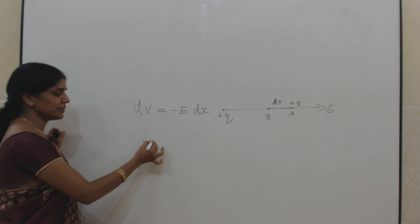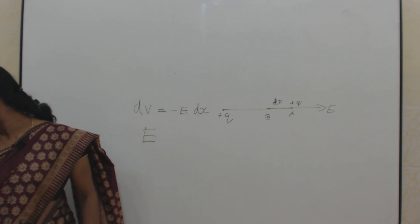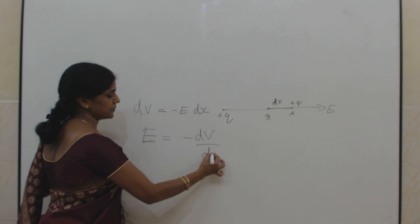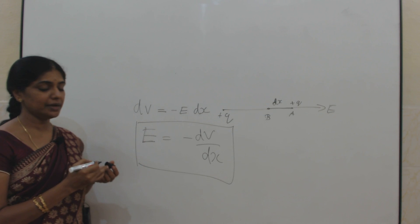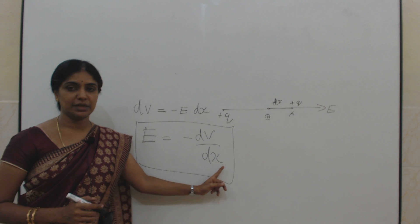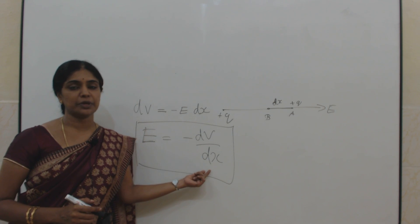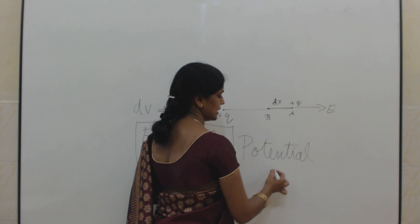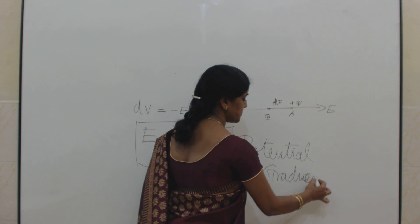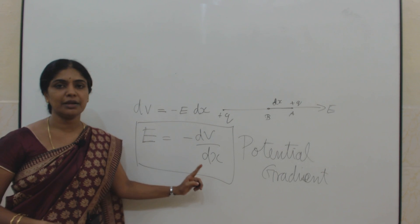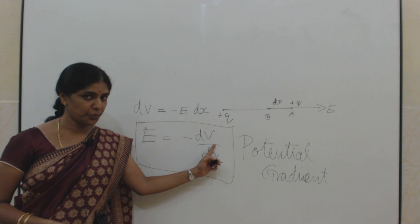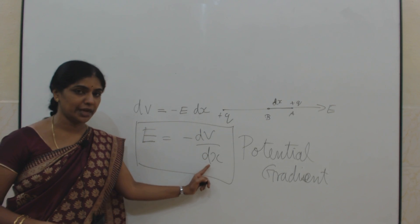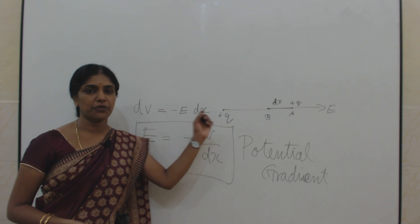So, this negative sign indicates this work is done against this force of repulsion. What is E here? Electrical field intensity. From this, I can write E equal to minus dV by dx. That is, difference in potential with respect to the distance — change in potential with respect to the distance — that we call it as the potential gradient. So in this way, I can define this electric field intensity as negative potential gradient. This negative sign indicates the work is done against the force of repulsion.